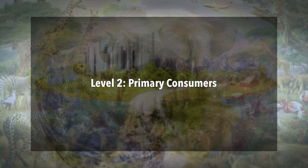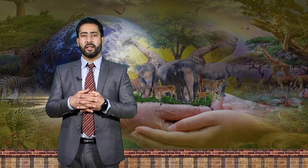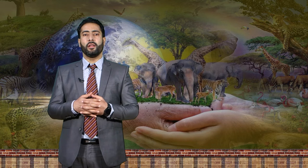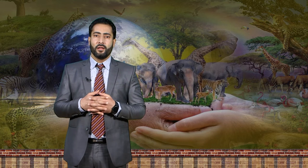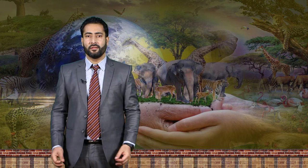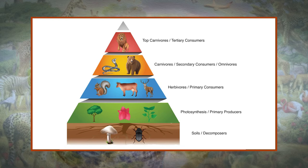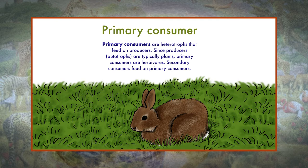In level 2, i.e., primary consumers: the next trophic level in a food chain or ecological pyramid is trophic level 2. The organisms at this level feed on the primary producers and are called primary consumers. Primary consumers are herbivores — animals that are adapted to consuming and digesting plants and algae, i.e., autotrophs.